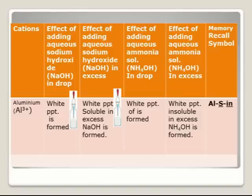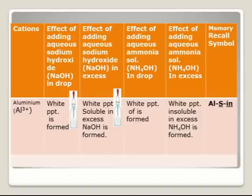Our first test solution contains aluminum. The two test reagents are sodium hydroxide and ammonium hydroxide, and we will first use sodium hydroxide. We will add it to a solution that contains the aluminum ion, first in drop and then in excess. When sodium hydroxide is added in drop, a white precipitate is formed. When added in excess, the white precipitate becomes soluble in excess sodium hydroxide.